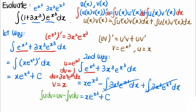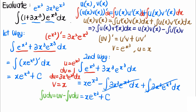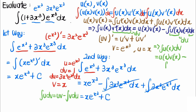We can neglect writing the constant of integration here, and rearranging gives the integral of u(x)v′(x) dx equals u(x)v(x) minus the integral of u′(x)v(x) dx. Writing v′(x) dx as dv and u′(x) dx as du, the whole thing becomes the integral of u dv equals u·v minus the integral of v du — which is precisely the integration by parts formula.